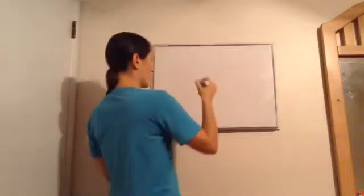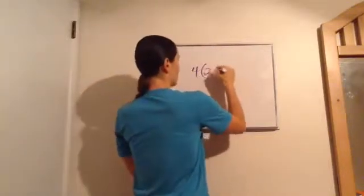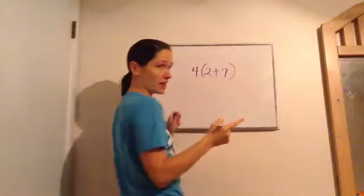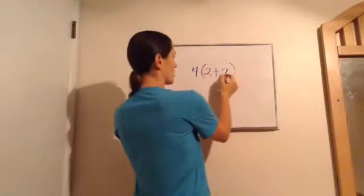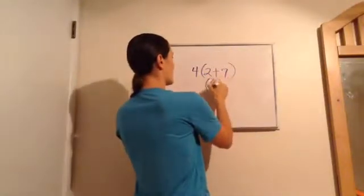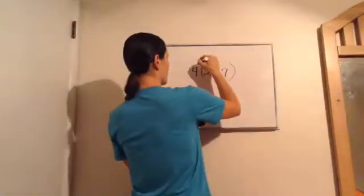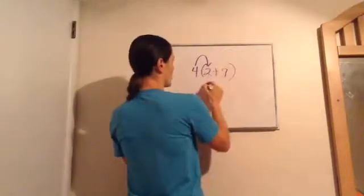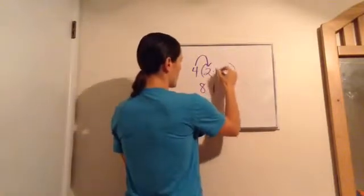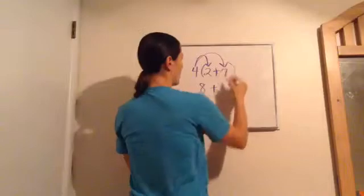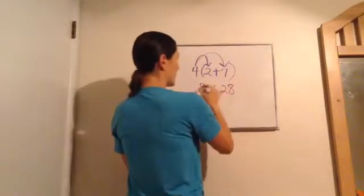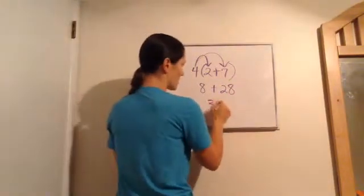So let's start with the distributive property. So far you've learned the distributive property to be something like this. Early on you learned to go 7 plus 2 is 9 and then 4 times 9 is 36. With the distributive property, we taught you to go 4 times 2 is 8 plus 4 times 7 is 28. 28 plus 8 is 36.